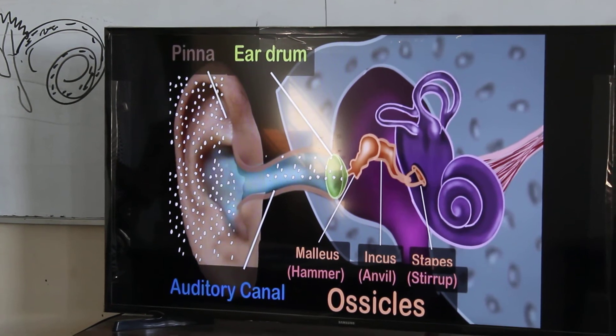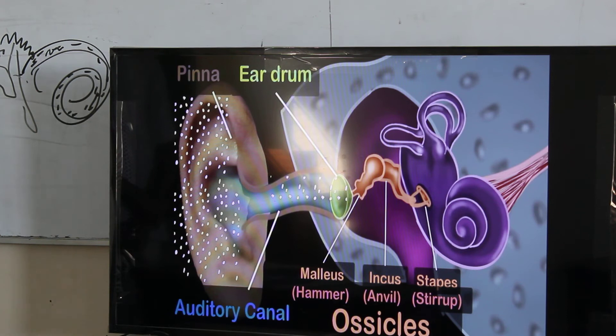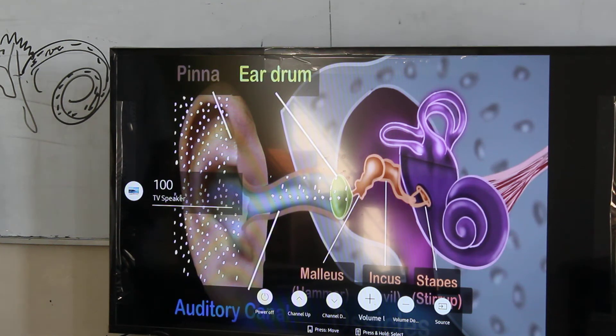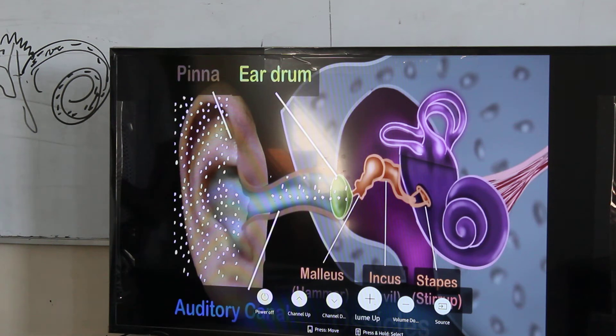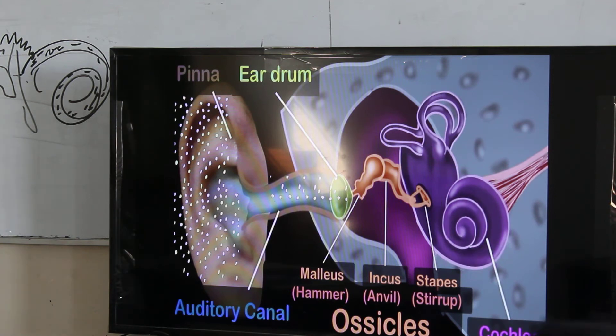And that brings us to the inner ear. The inner ear consists of a bony structure, which is shown in purple. Now as you can see, the top part of this structure consists of three semi-circular canals. They help us in maintaining our balance, like walking or dancing or whatever we do. So they are not involved in hearing. The part that is involved in hearing is this snail-like structure. This is called the cochlea. What does it do?